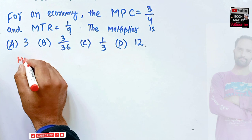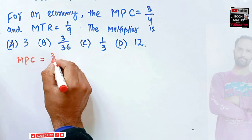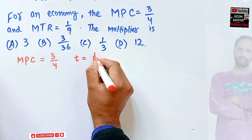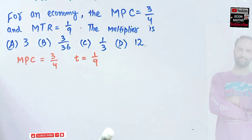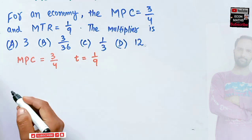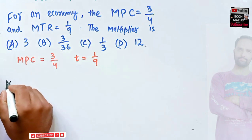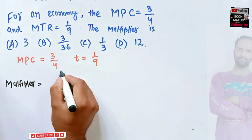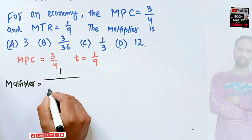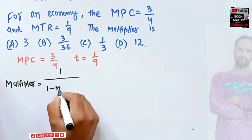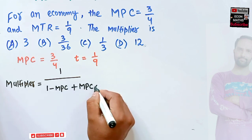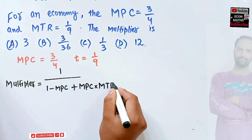We have the marginal propensity to consume equal to 3/4, and the marginal tax rate is given as 1/9. To find the multiplier, I will write the formula first. The multiplier is equal to 1 upon (1 minus MPC plus MPC into MTR). This is the formula.